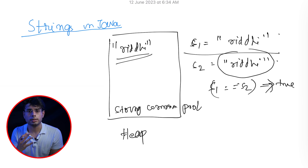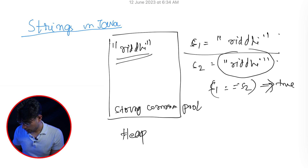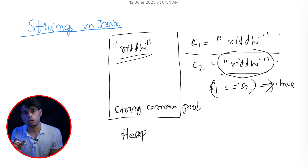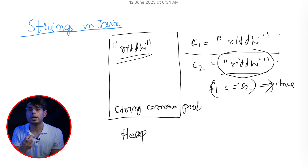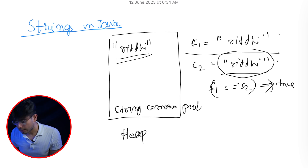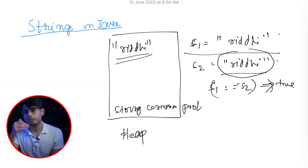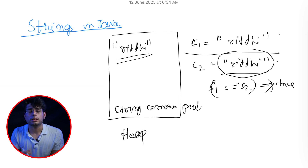So basically what the JVM does to efficiently use memory is: whenever you define a new string literal, it first checks whether that string literal is present in the string common pool or not. If it is present, it returns the same instance - so printing the address comparison will return true.